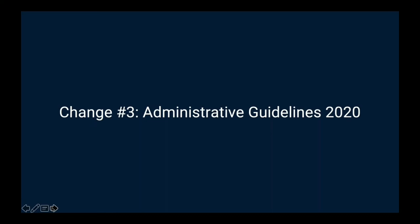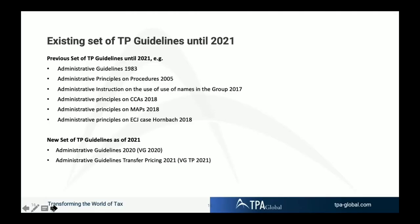Change number three is the introduction of administrative guidelines 2020, published just before Christmas last year. That is part of a general update of the set of transfer pricing guidelines. The previous set included very old guidelines from 1983, principles on procedures from 2005, a guideline on the use of databases from 2017, guidelines on CCAs from 2018, on MAPs from 2018, and on the court case Home Bar from 2018. All these documents have now been replaced.